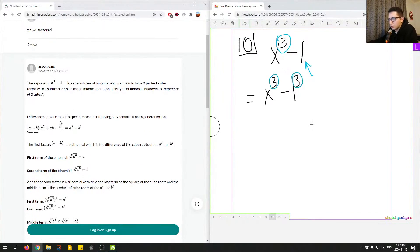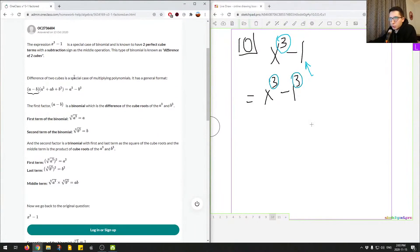So, let's look at the junior tutor's answer, and then we'll get back to this. The expression x cubed minus 1 is a special case of binomial. It is known to have two perfect cube terms. With a subtraction sign as the middle operation, this type of binomial is known as the difference of two cubes. The difference of two cubes is a special case of factoring polynomials.